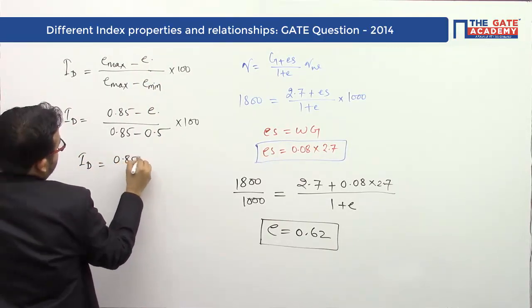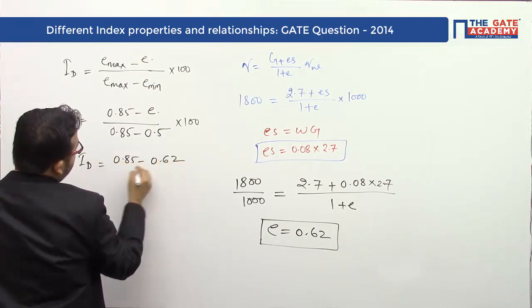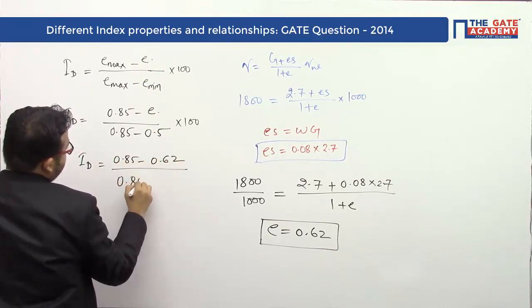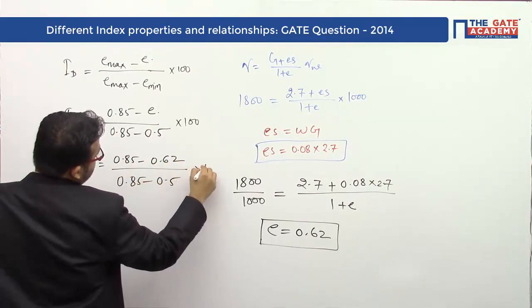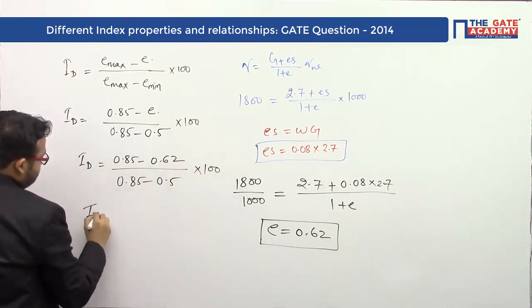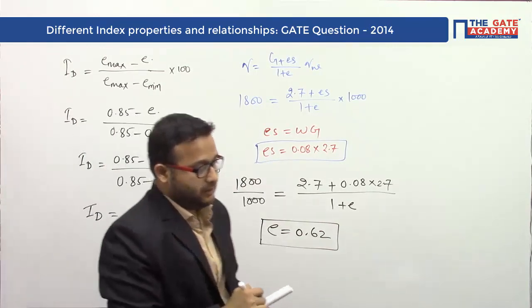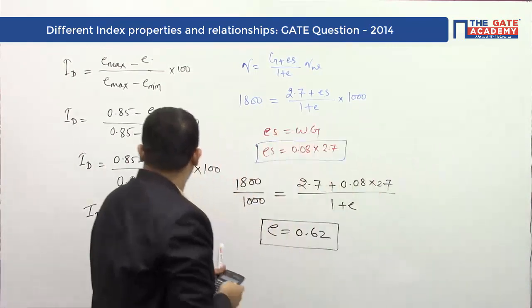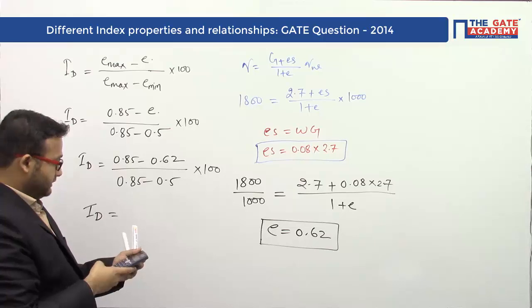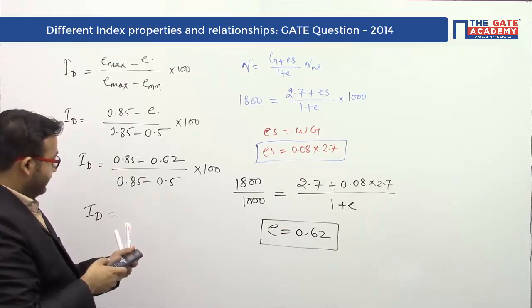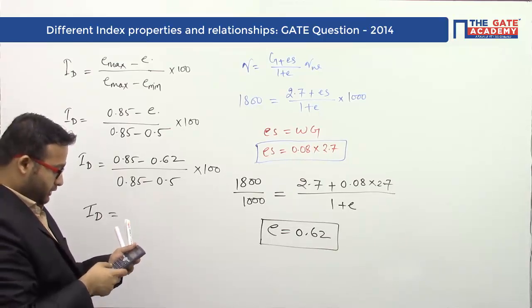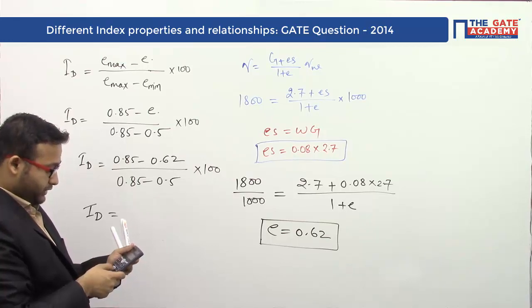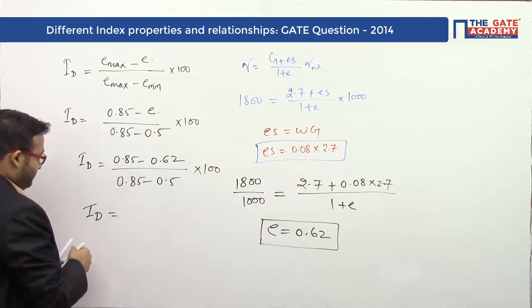I_D = (0.85 - 0.62) / (0.85 - 0.5) × 100. So the value of density index can be calculated: (0.85 - 0.62) / (0.85 - 0.5) × 100 = 65.71%.